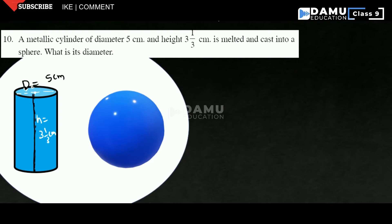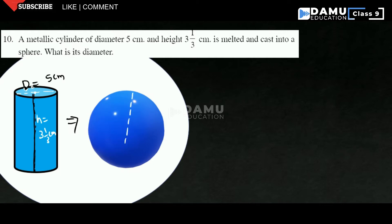After that, it is melted and cast into a sphere. So it is melted and made into a sphere. What is its diameter? We have to find the diameter. Let us take this is the center — what is its diameter we need to find.